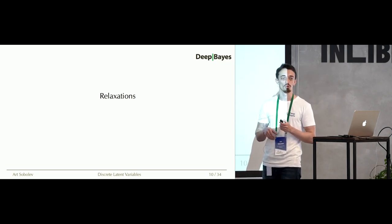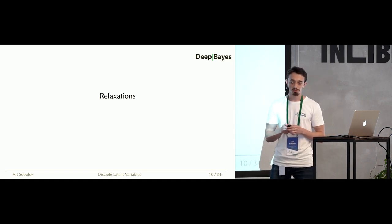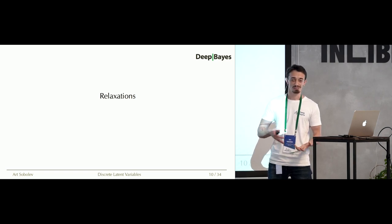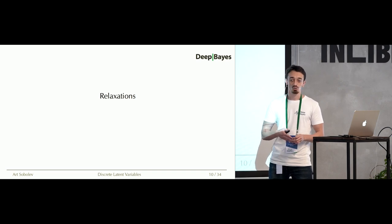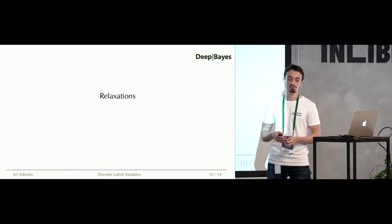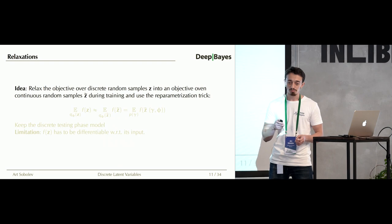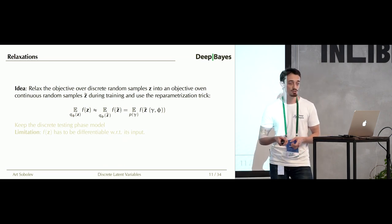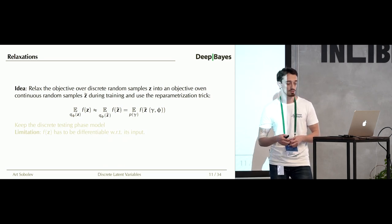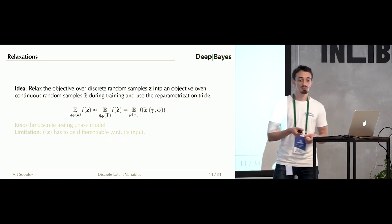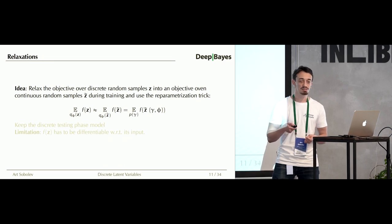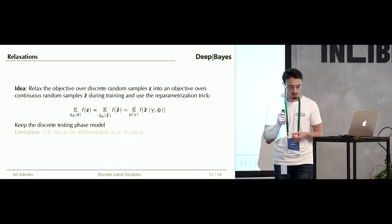Having critiqued REINFORCE, let's try to leverage the good things of the reparameterization trick. You can write down a reparameterization for discrete random variables, but they are not differentiable — so no luck with the gradient estimator directly. In order to have a differentiable reparameterization, we need to relax our discrete random variables and move to the continuous case. The idea is to first approximate our discrete problem with a continuous problem: Z are discrete random variables and Z-tilde are continuous random variables that hopefully exhibit similar behavior to the discrete case.